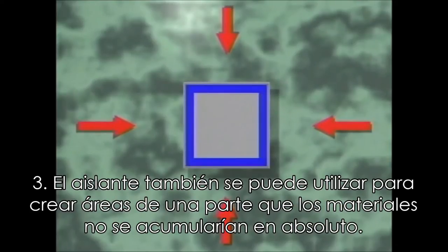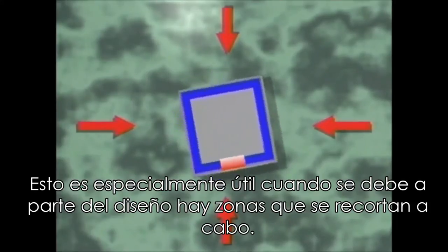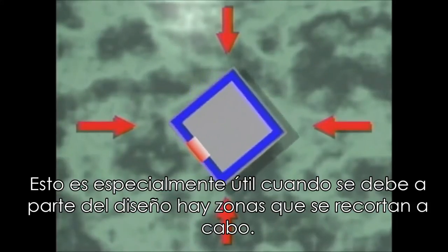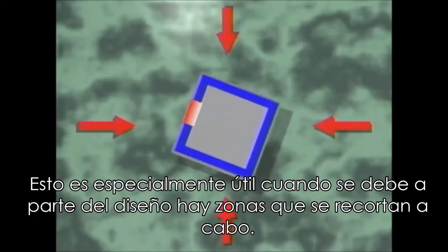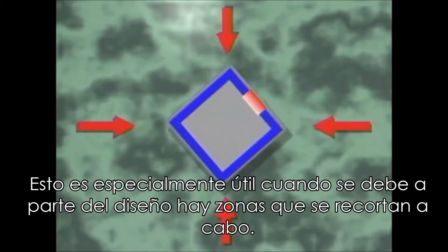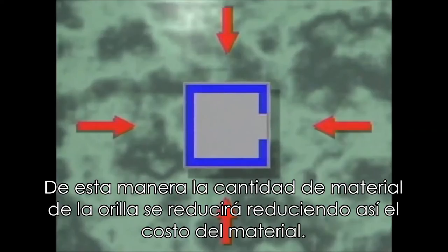Three: shielding can also be used to create areas of a part where materials will not build up at all. This is especially useful when, due to part design, there are areas which are trimmed out. By doing this, the amount of the initial material shot weight will be reduced, thus reducing material cost.